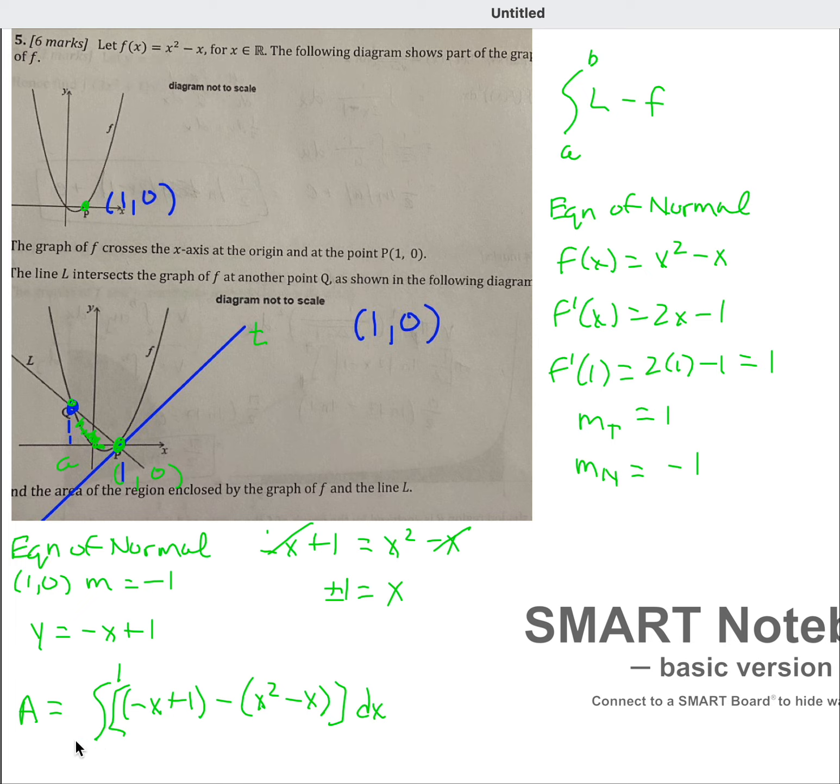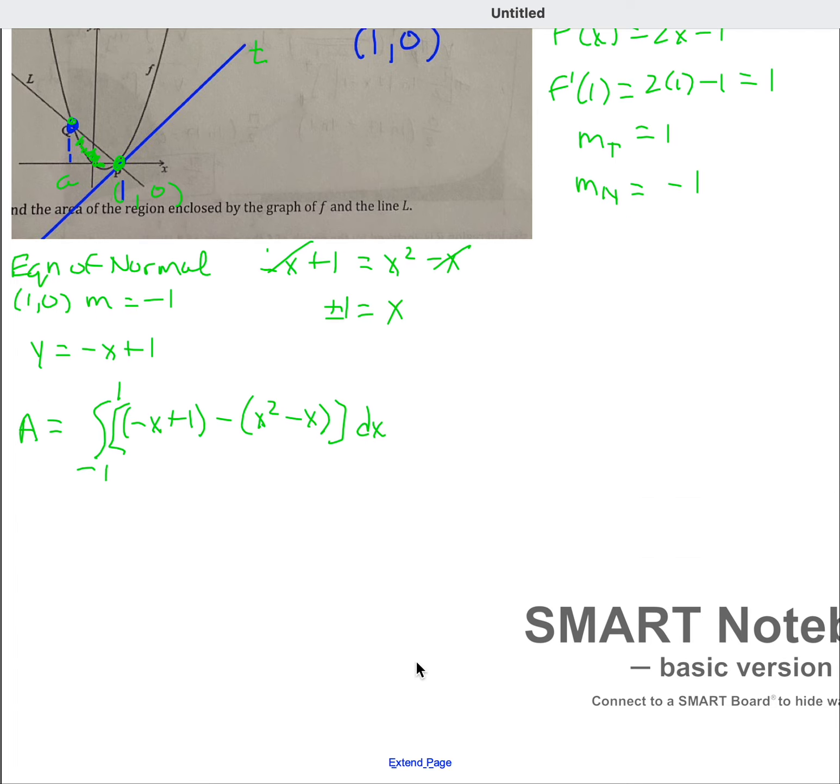So that is the integral we must take to get the area between the line and the curve. So let's clean that up. Negative 1 to 1 of, let's see, negative x plus 1 minus x squared plus x dx, which would be the integral from negative 1 to 1, negative x plus, so just 1 minus x squared.